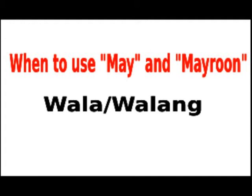Three. Mayroon alone may answer a question. The word 'oo' or 'yes' at the start of a sentence, as well as the noun or pronoun after mayroon, is optional. May bagong sapatos ba si Bob? — Does Bob have a new pair of shoes? Mayroon. Or: Oo, mayroon siya. — Yes, he has.